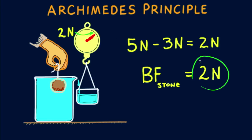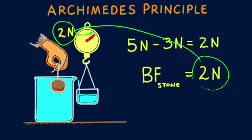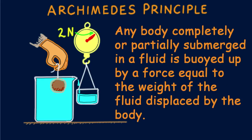The buoyant force, Bf, on the stone is 2 Newtons. This relationship of buoyant force and volume of fluid displaced was discovered in ancient Greece by the philosopher and scientist Archimedes. It's called Archimedes Principle.